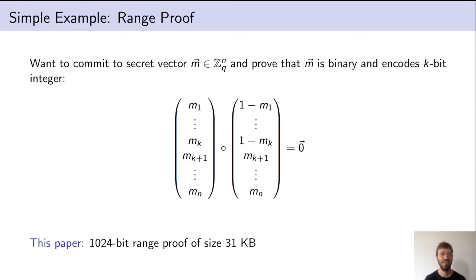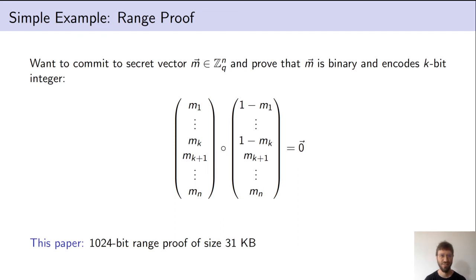Let me start with a simple example that shows that product proofs are useful. This example is about range proofs. In a range proof, the goal is to commit to some vector and then prove that the vector is binary — all the coefficients are either 0 or 1 — and that the integer encoded by the vector lies in a certain interval. This is called a range proof.